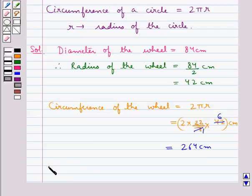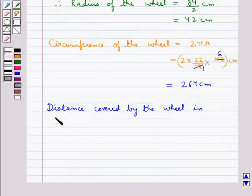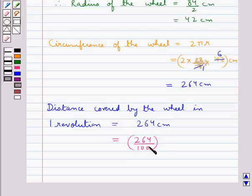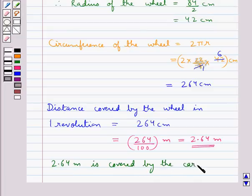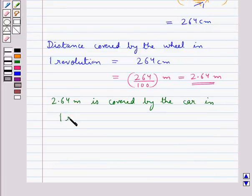Now, the distance covered by the wheel in one revolution is equal to the circumference of the wheel, which is 264 cm, or you can say this is equal to 264/100 m, or 2.64 m is the distance covered by the wheel in one revolution.